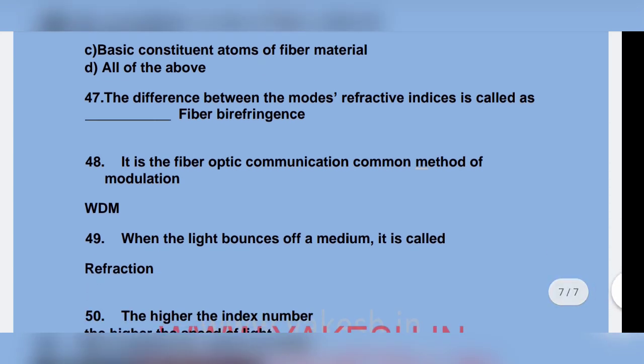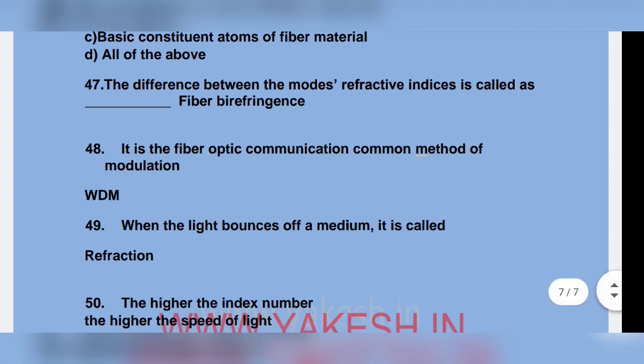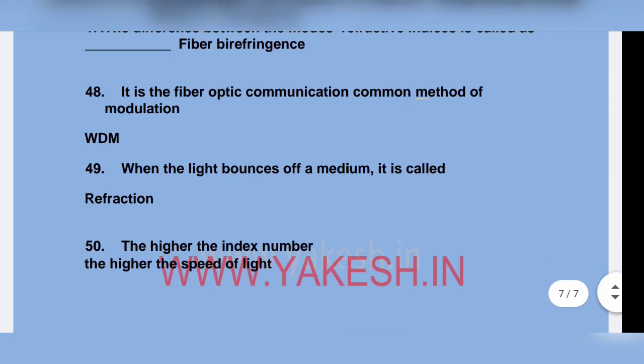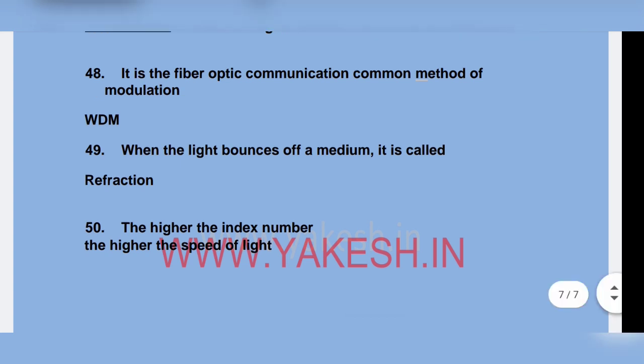When light bounces off a medium, it is called reflection. The higher the index number, the lower the speed of light.